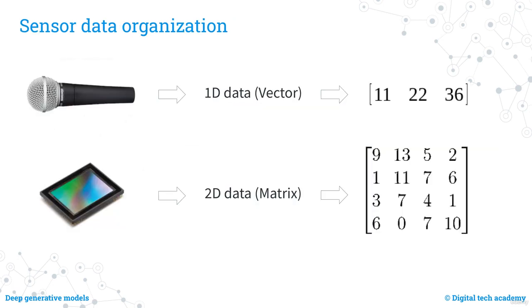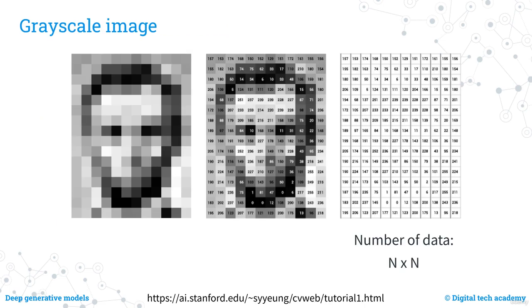The digital code can be arranged as a one-dimensional vector for an audio signal, where each element represents the amplitude of the pressure signal, obtained by sampling the analog signal at a fixed frequency. For a camera signal, it can be organized as a two-dimensional array, with each element in the matrix corresponding to a pixel in the image. Each matrix represents a single image, and multiple image frames are recorded in multiple matrices. If the original image consists of n-by-n pixels, the resulting matrix will also have dimensions n-by-n. This process applies to grayscale images, where each pixel is associated with a single numerical value.